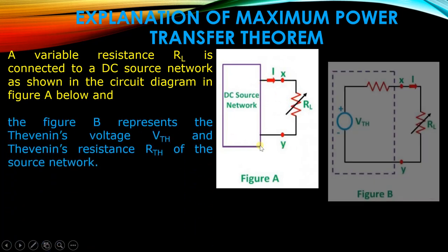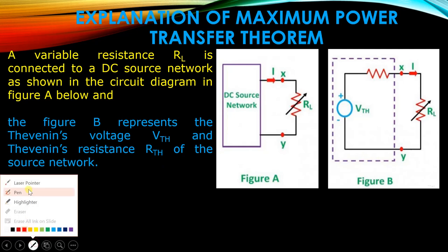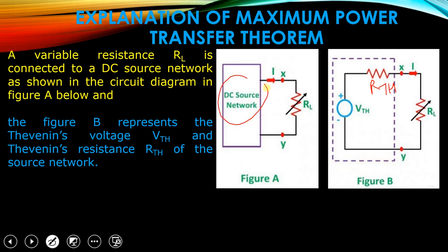Figure B represents the Thevenin's voltage Vth and Thevenin's resistance Rth. This DC source network is solved by using Thevenin's theorem, where we find Vth, called the Thevenin voltage, and Rth, called the Thevenin resistance.